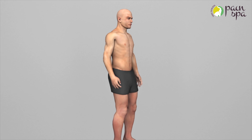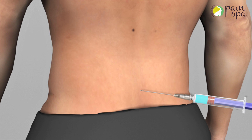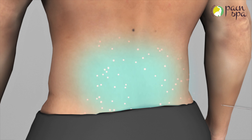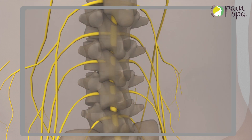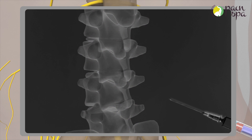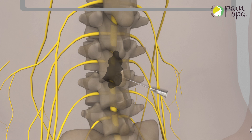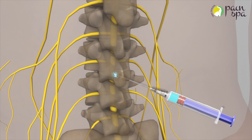The procedure is done under local anesthetic. Doctor Krishna will initially numb the skin and deeper tissues with a numbing medicine. He will then use a special x-ray machine to guide the needle accurately into the epidural space. He may inject contrast medium to confirm the needle position.